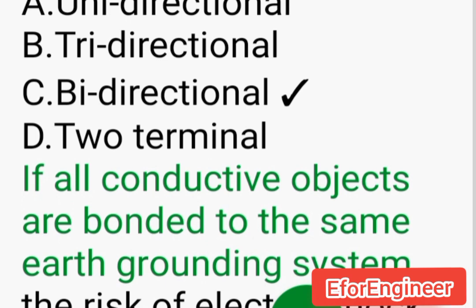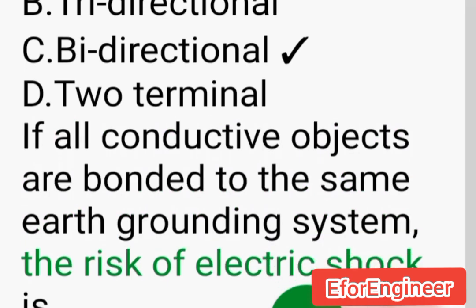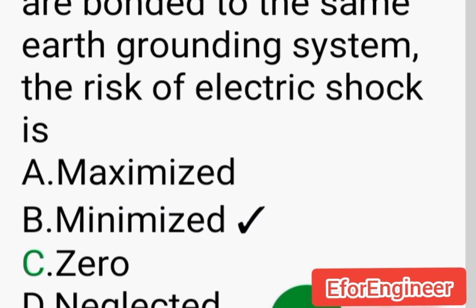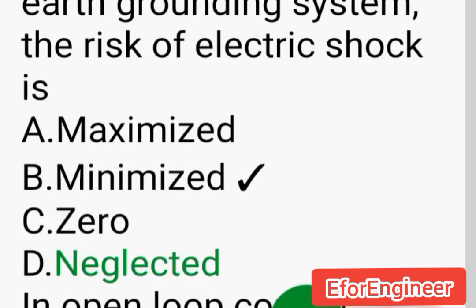If all conductive objects are bonded to the same earth grounding system, the risk of electric shock is: A. Maximized, B. Minimized, C. Zero, D. Neglected.